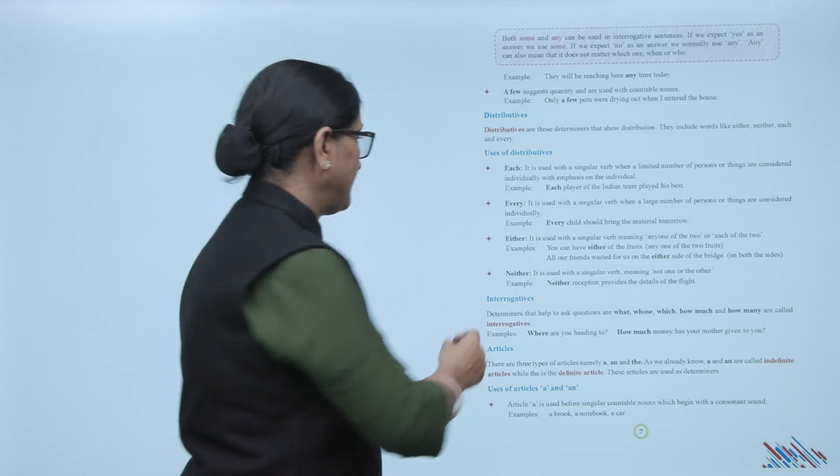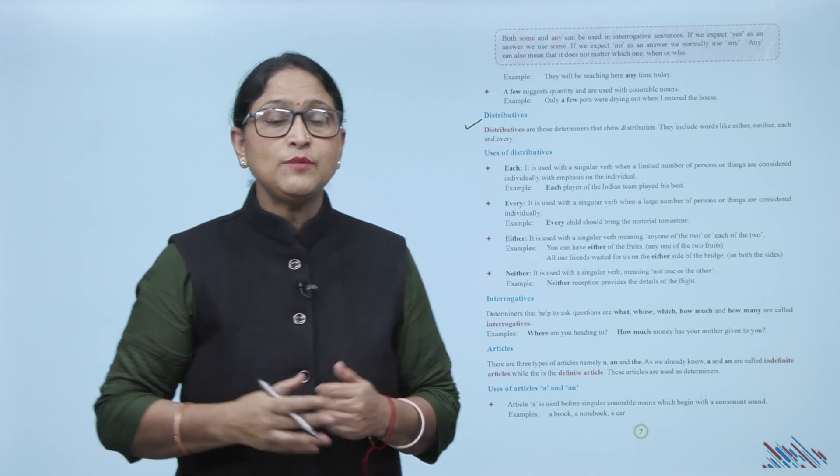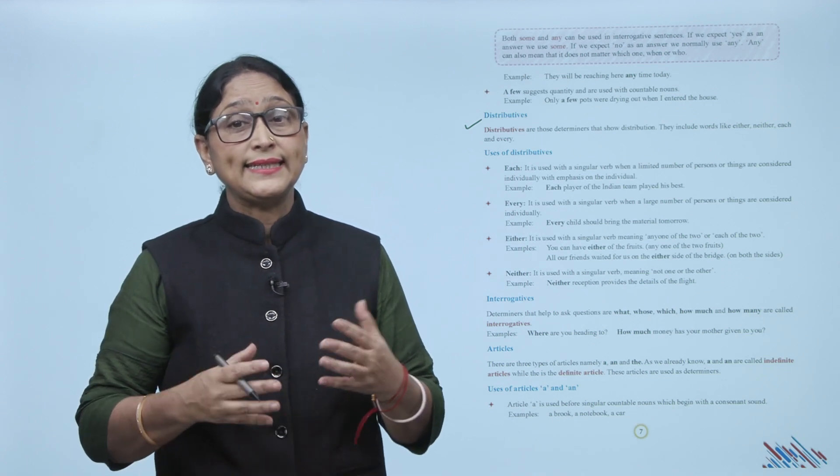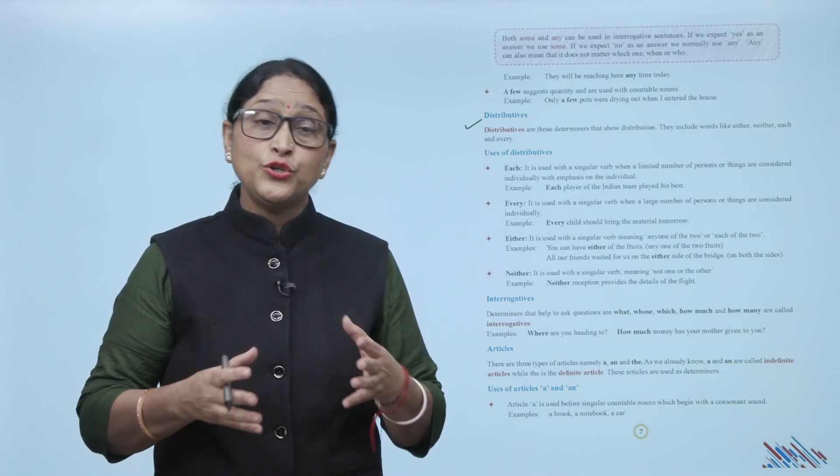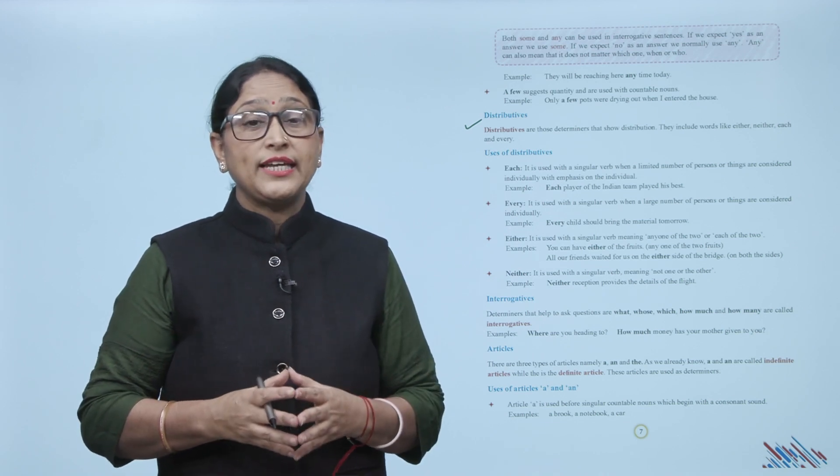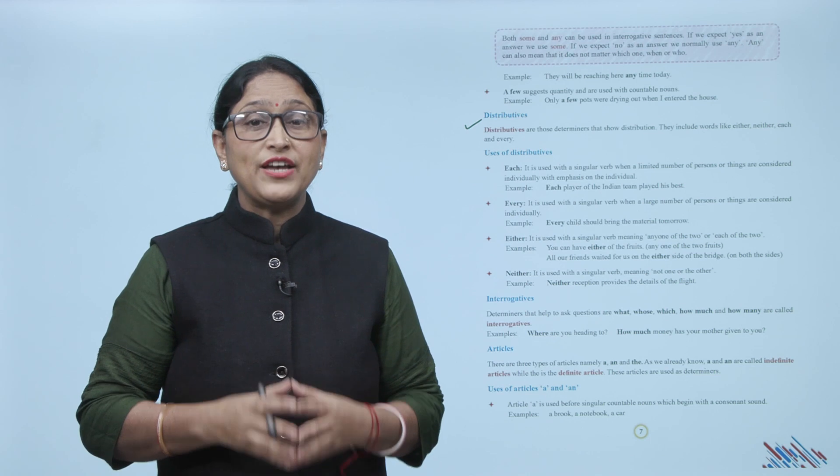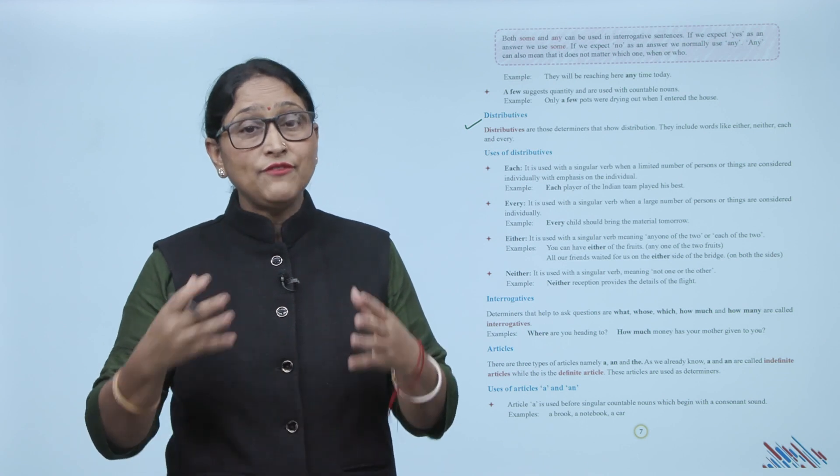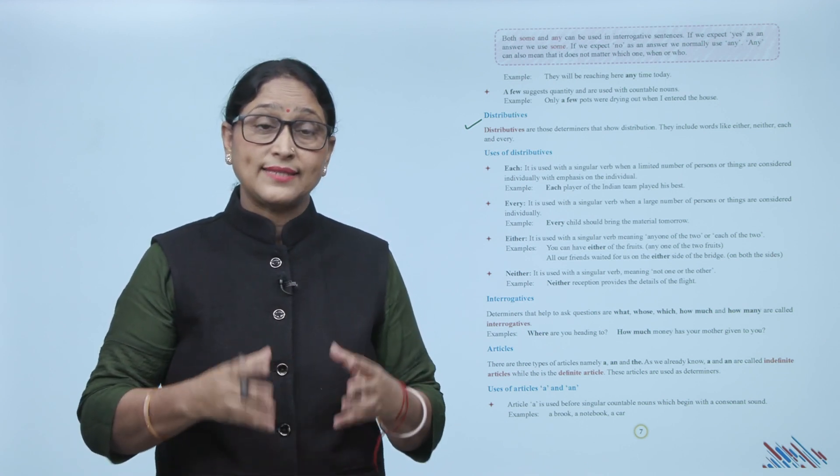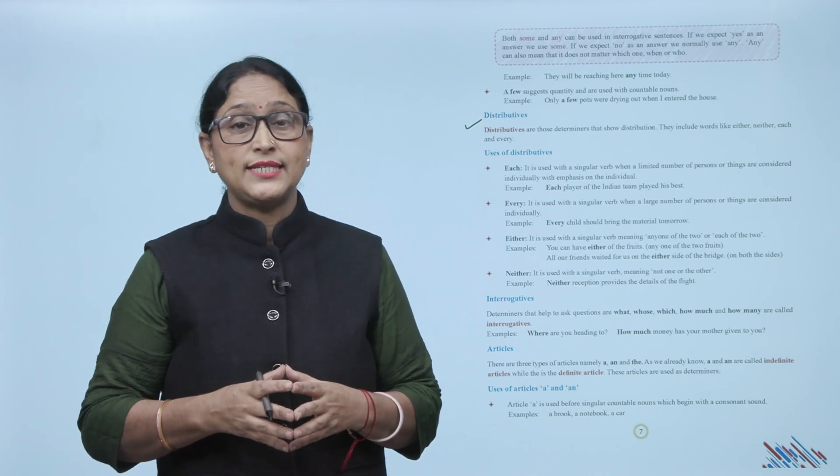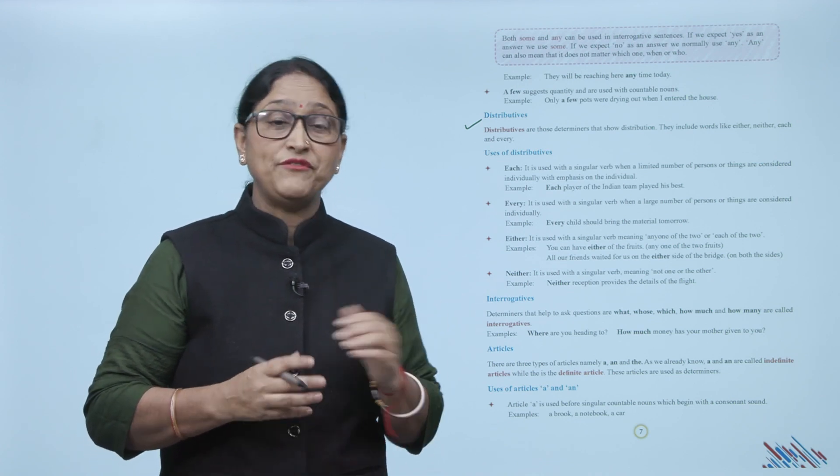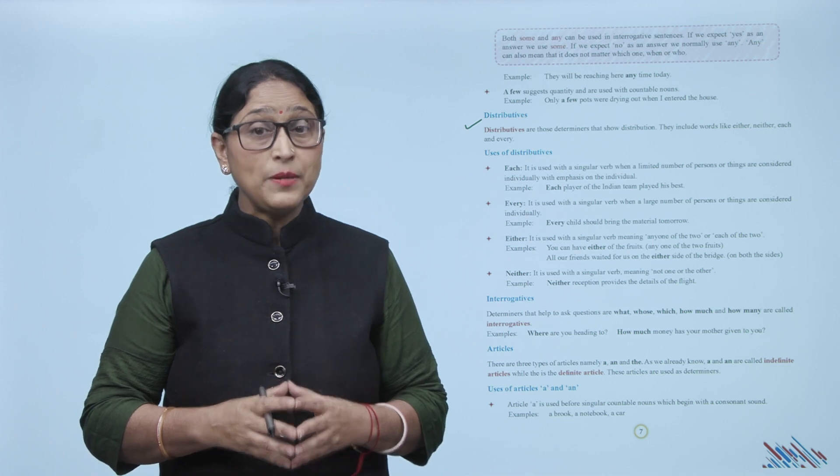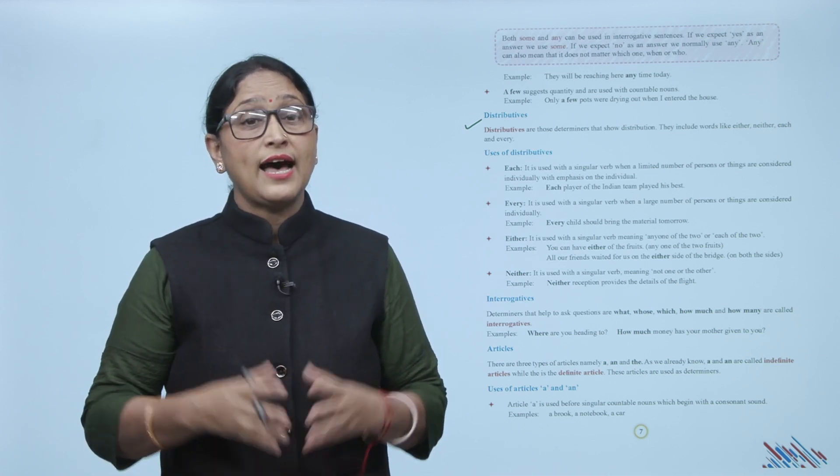Next is distributives. Distributives are those determinants that show distribution. They include words like either, neither, each, and every. Uses of distributives: each is used with a singular verb when a limited number of persons or things are considered individually with emphasis on the individuals. Example: each player of the Indian team played his best. Next is every. It is used with a singular verb when a large number of persons or things are considered individually.